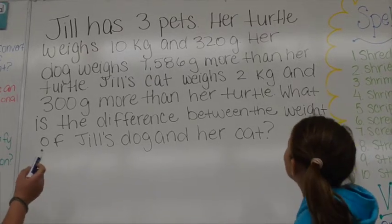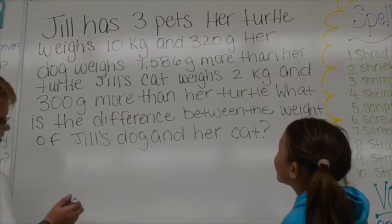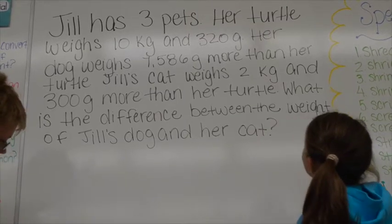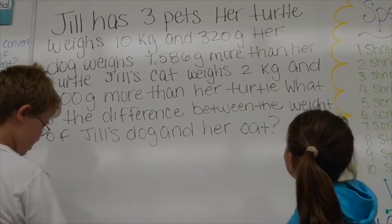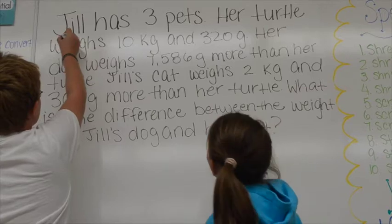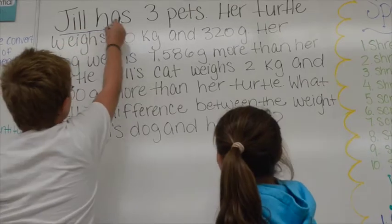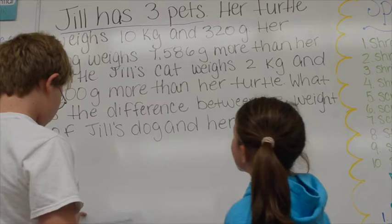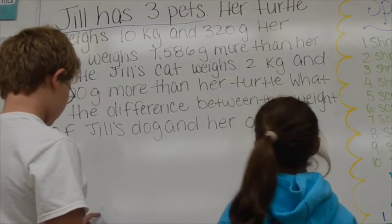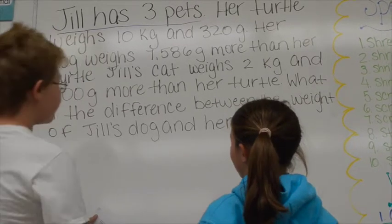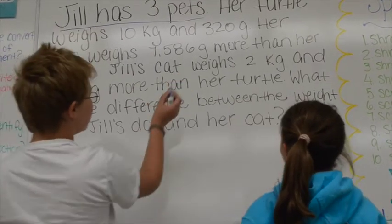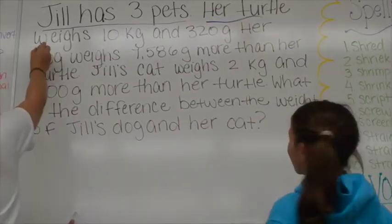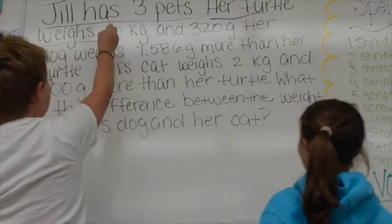Jill has 3 pets. Her turtle weighs 10 kilograms and 320 grams. Her dog weighs 7,586 grams more than her turtle. Jill's cat weighs 2 kilograms and 300 grams more than her turtle. What is the difference between Jill's dog and her cat?